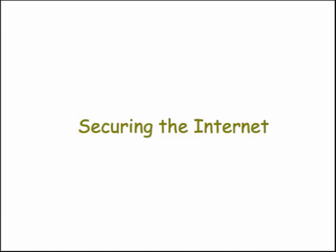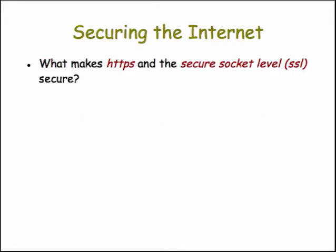Now that we've seen how some of the modern cryptographic techniques work, let's see how they work together to make our internet secure. Securing the internet involves making the HTTPS protocol and the secure socket layer protocol secure. You're all familiar with HTTPS — this is the protocol you use when you want to give Amazon your credit card number. The secure socket layer is a transport level protocol used when the client and server want to communicate through encrypted messages. So both of these need to be made secure.